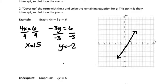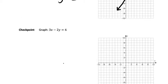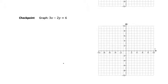So I have a checkpoint problem here. It's 3x minus 2y equals 6, so you should draw this graph, check your answer, and then you can move on to the homework.